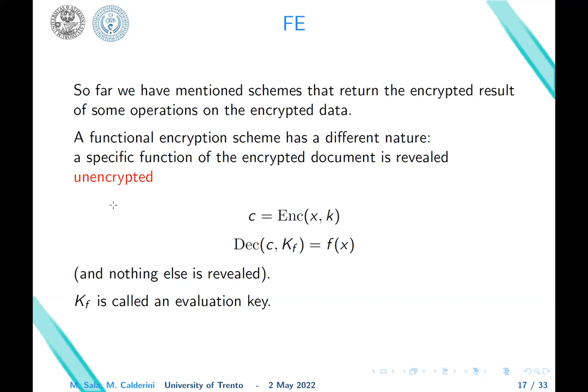Functional encryption. Functional encryption is a slightly different concept. So far, we have mentioned schemes that give the encrypted result of some operations on encrypted data. Functional encryption schemes, on the contrary, reveal a specific function of the encrypted document unencrypted. So if C is the encryption of X, then we can perform a kind of decryption applied to C using a special key called an evaluation key. And the result of this decryption is a function directly of X, the plaintext, and we can do this when nothing else is revealed.